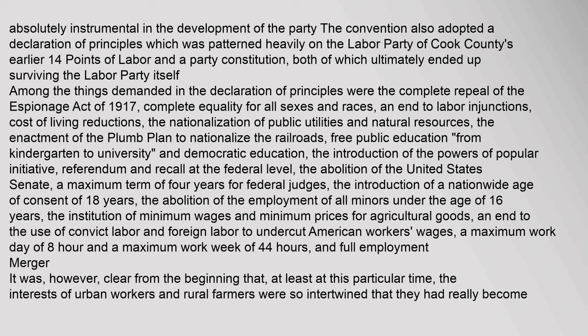Among the things demanded in the Declaration of Principles were the complete repeal of the Espionage Act of 1917, complete equality for all sexes and races, an end to labor injunctions, cost of living reductions, the nationalization of public utilities and natural resources, the enactment of the Plum Plan to nationalize the railroads, free public education and democratic education, the introduction of the powers of popular initiative, referendum and recall at the federal level, the abolition of the United States Senate, a maximum term of four years for federal judges, a nationwide age of consent of 18 years, the abolition of employment of all minors under the age of 16 years, the institution of minimum wages and minimum prices for agricultural goods, an end to the use of convict labor and foreign labor to undercut American workers' wages, a maximum work day of eight hours and a maximum work week of 44 hours, and full employment.